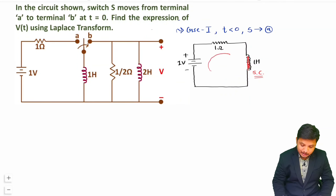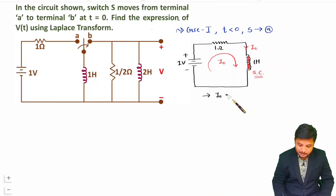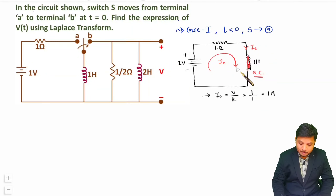What will happen is current will flow in this loop. Let us say this current is I0 and it will get stored inside the inductor. The value of this current is simply the voltage divided by resistance — that is V by R. Voltage is 1V and resistance is 1 ohm, so the current will be 1 ampere. So the inductor has energy stored and once you move the switch, this inductor will act as a current source of 1 ampere.